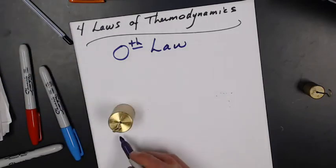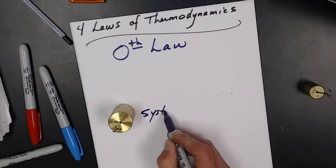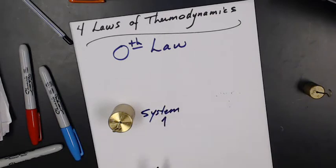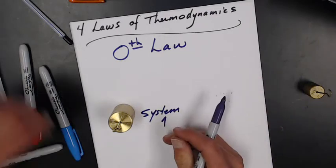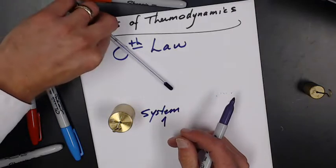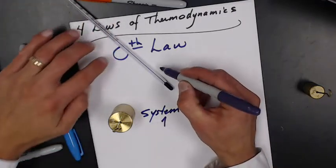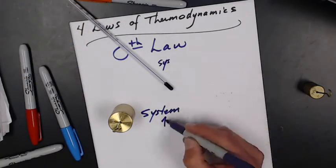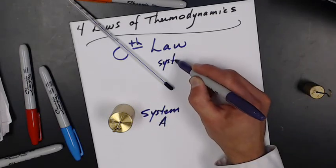Let's have a system here. So system one. System one is in thermal equilibrium with system two. I'm sorry, let's call this system A. System B.